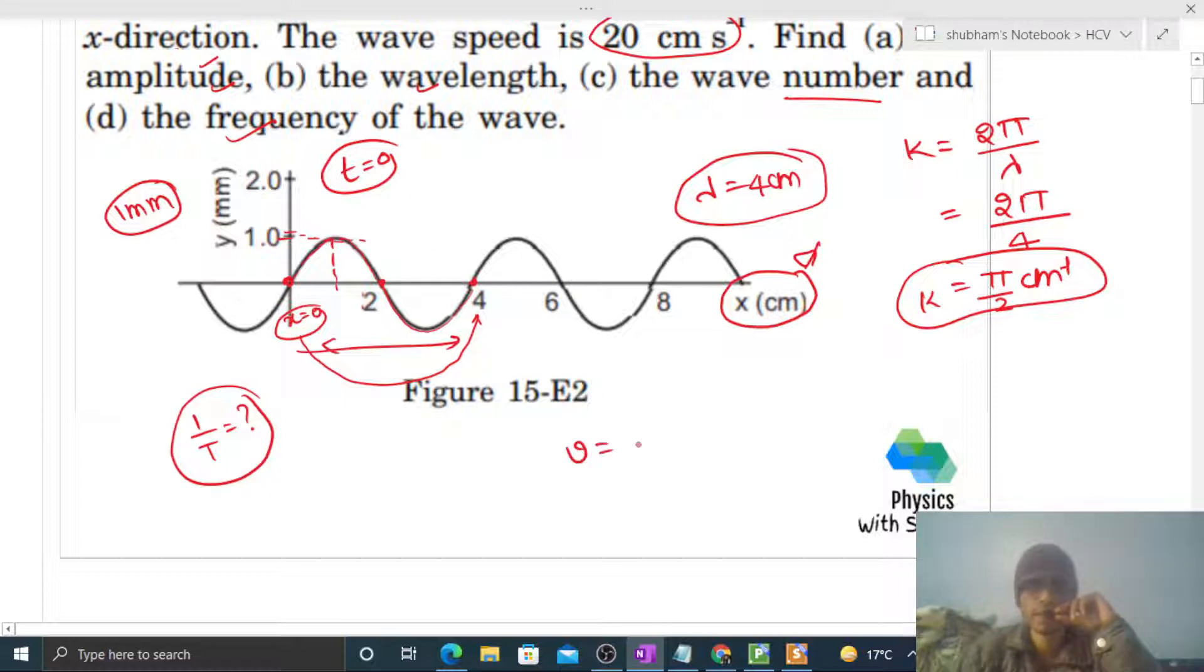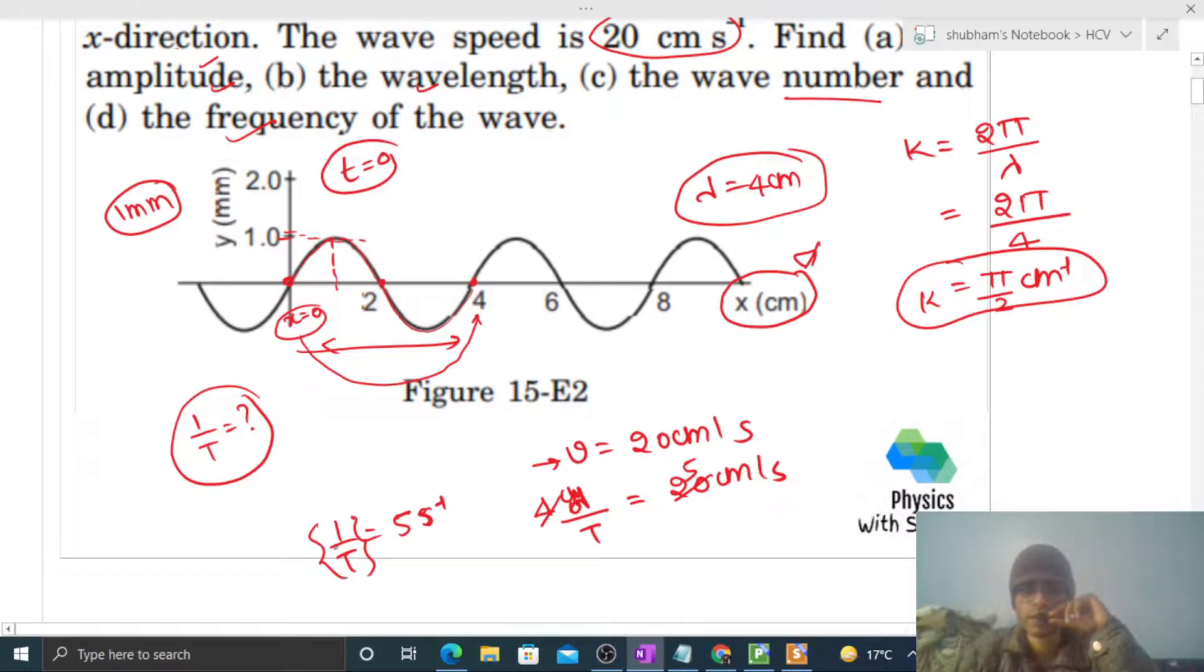You see, wave speed is given, that is 20 centimeter per second. Wave speed is nothing but wavelength divided by time period, that is 20 centimeter per second. And wavelength is given, means wavelength we have found out, 4 centimeter. So here this becomes 4. So it will be, 4 times 5 is 20, so one upon time period is 5, 5 per second. One upon time period is what we needed to find out, that is your frequency. So frequency will be 5 per second or you can say 5 hertz.